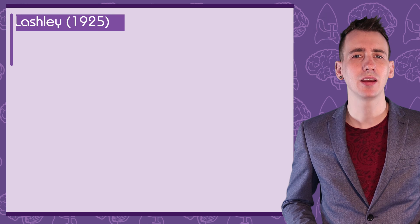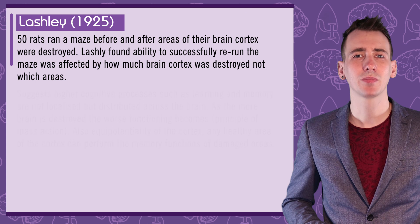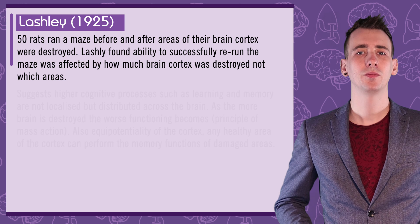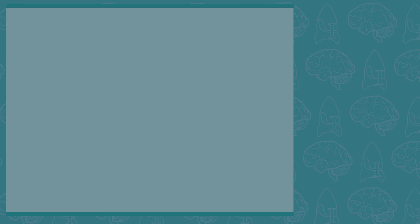This debate about holistic versus localised functions in the brain has been long-lasting. A classic study by Lashley in 1925 provides research evidence against localisation of function. Fifty rats ran a maze, then had different areas and amounts of their brain cortex cut away, and then had to run the maze again. Lashley found that the rats' difficulty in remembering how to run the maze depended on how much of the brain cortex was removed, not which parts were removed. He suggested the entire brain has equal potentiality — that functions are spread out, and healthy areas of the brain can potentially take on functions like memory or learning as well as damaged areas.